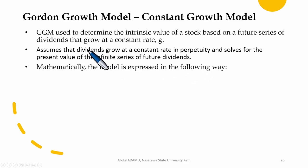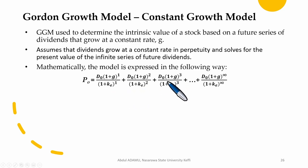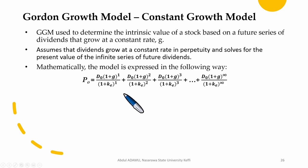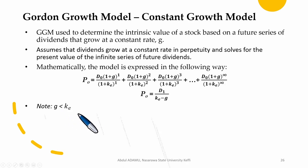For the Gordon Growth Model, the mathematical model is expressed as follows. The dividend in year one is discounted back one period, the second dividend is discounted back two periods, and so on. This model is easily expressed as: Dividend year one divided by the cost of capital minus the growth rate. The Gordon Growth Model holds only when the cost of capital is greater than the growth rate.